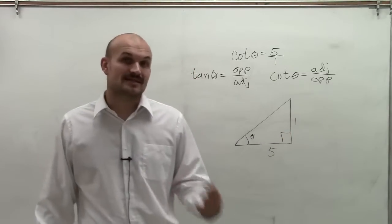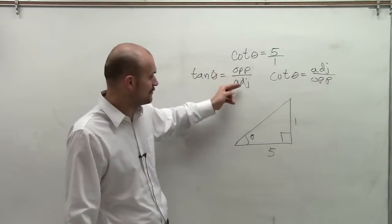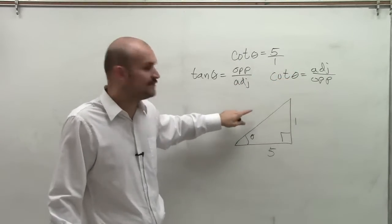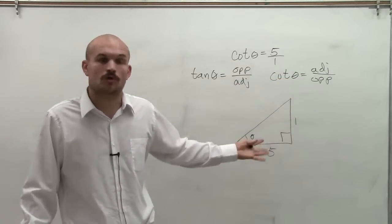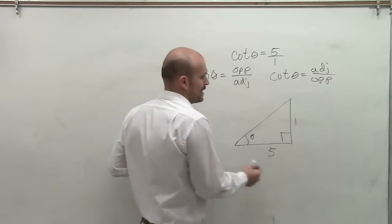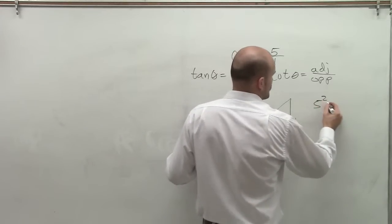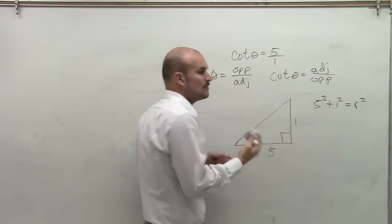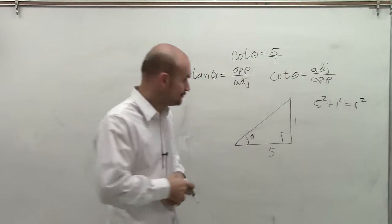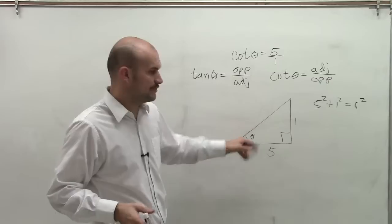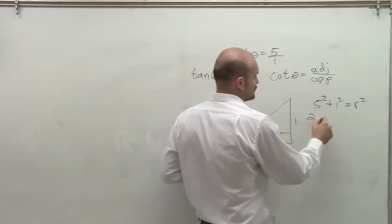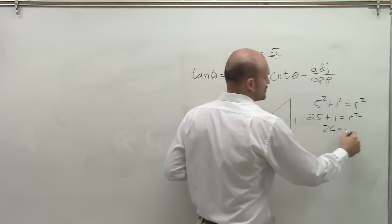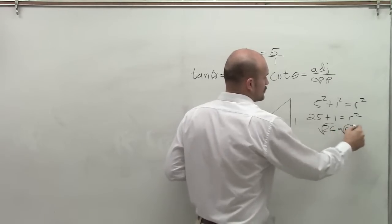Now to evaluate the rest of the trigonometric functions, we know that tangent is opposite over adjacent, cotangent is adjacent over opposite. To find the rest of them, we need to figure out what our hypotenuse is, or our radius. So to determine that, we have to use Pythagorean theorem. So I'll say 5 squared plus 1 squared equals r squared, as our hypotenuse will represent our radius in dealing with an angle. So therefore, I have 25 plus 1 equals r squared, 26 equals r squared.